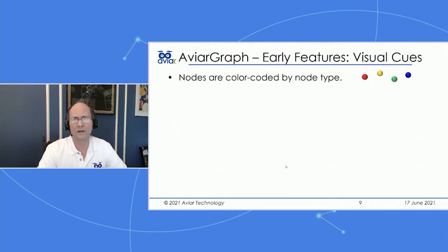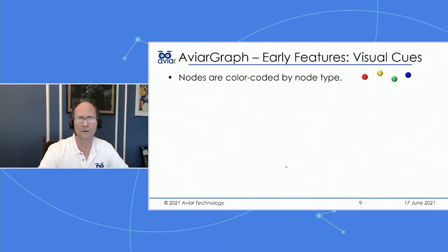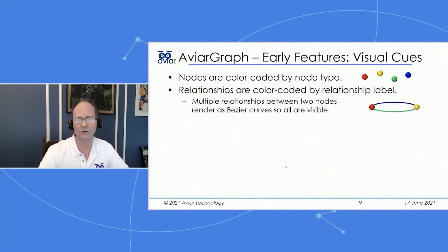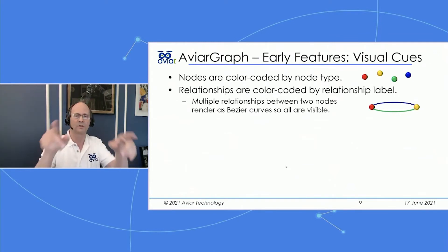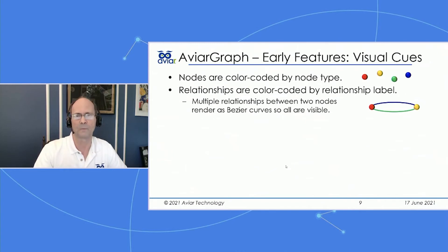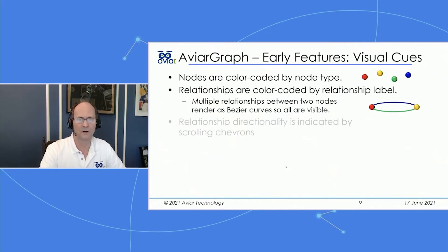Nodes are color-coded by node type — as you'll see in the movies database, there are two different types of nodes, enabling you to distinguish node types based on color. Relationships are also color-coded by relationship label. For visibility in three-dimensional space, when you have more than one relationship between two nodes, they are rendered as bezier curves in order to be able to see them. The bezier curves are rendered in three dimensions, making it easy to tease them out and identify what the relationships are between a pair of nodes.